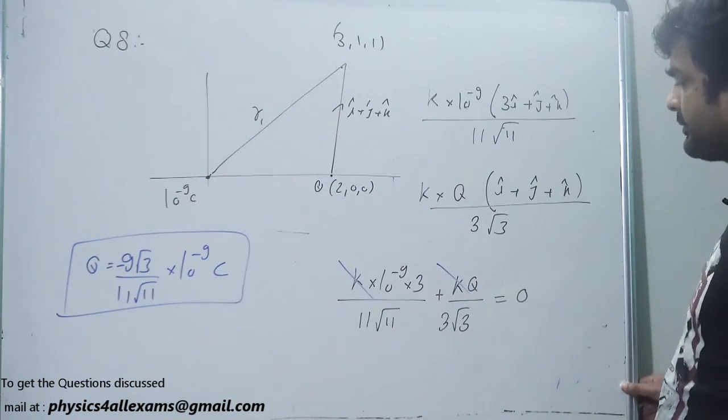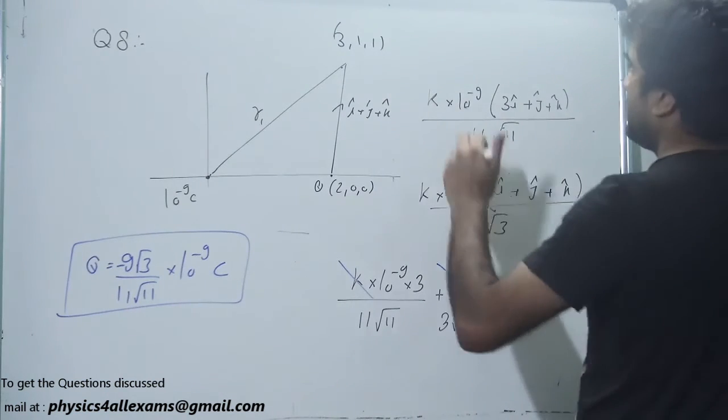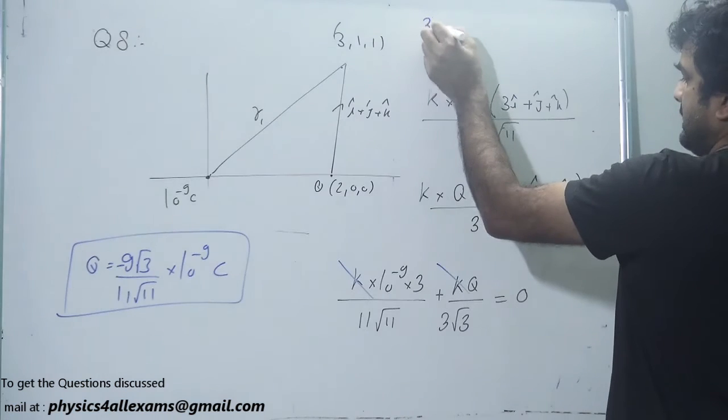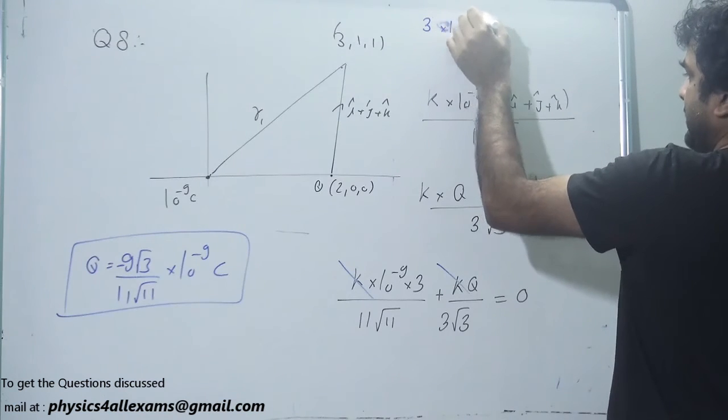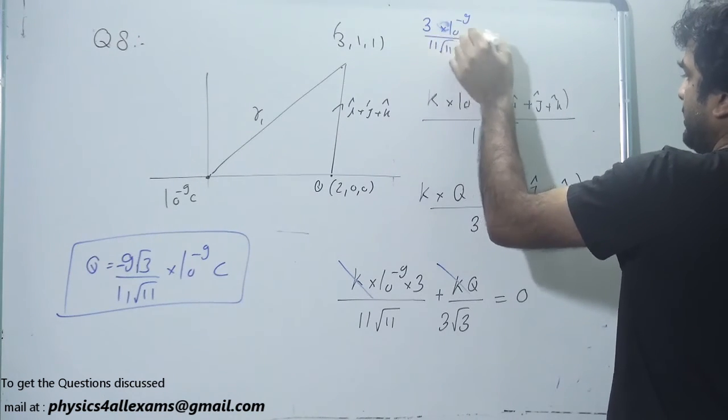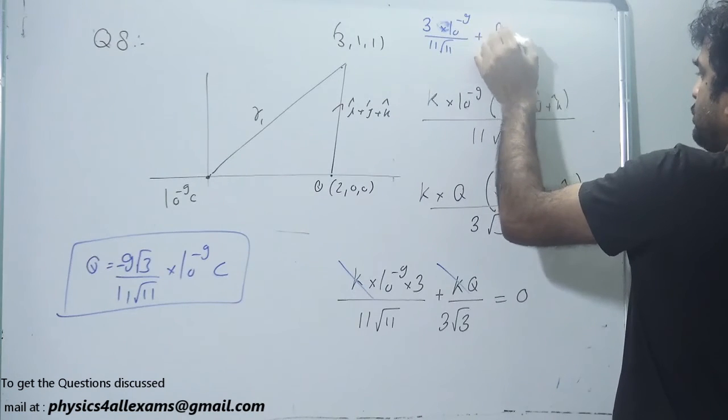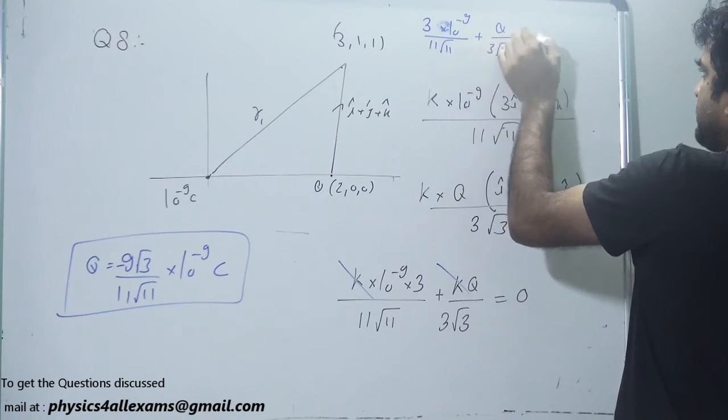That means if 3 into 10 to power minus 9 upon 11 root 11 plus Q upon 3 root 3 is 0,